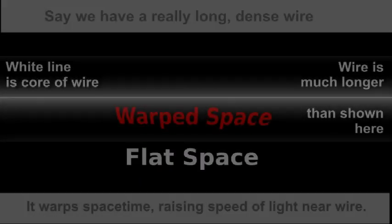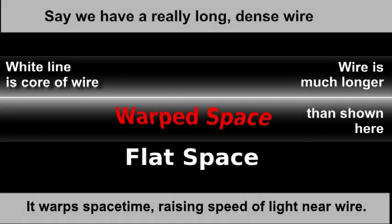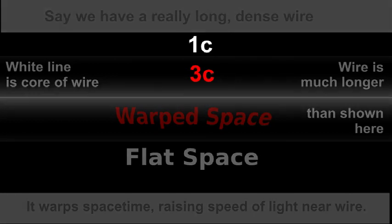So suppose we have a very long, dense wire with a particular mathematical form. This is the corridor that I was talking about earlier. We've formulated this wire so that the speed of light, the coordinate speed of light, is faster in a limited space around the wire. That's the warp space shown in red. For simplicity's sake, we'll use the numbers in our example and say that a rocket traveling close to the core of the wire can travel three times faster than the coordinate speed of light outside the wire.